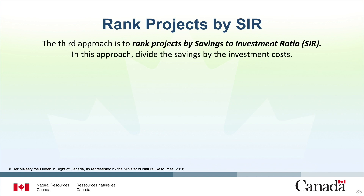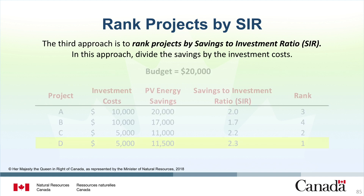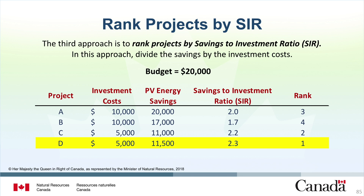The third approach is to rank the projects by savings-to-investment ratio. Simply divide the savings by the investment costs. Project A has an investment cost of $10,000 and $20,000 of present value energy savings — therefore it has an SIR of 2. Project D has an investment cost of $5,000 and $11,500 of present value energy savings — it has an SIR of 2.3. The greatest SIR belongs to Project D with an SIR of 2.3, followed by C, A, and B.